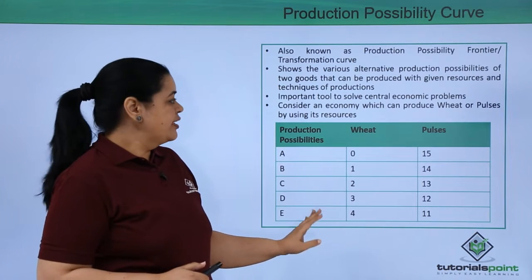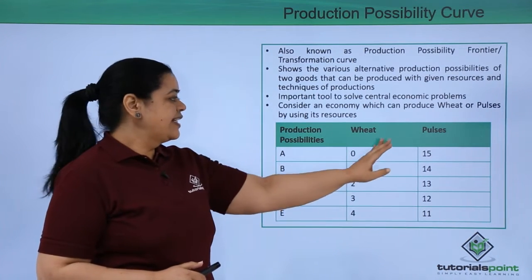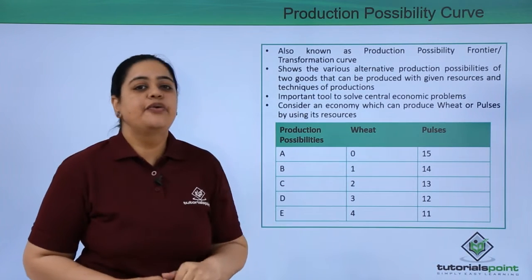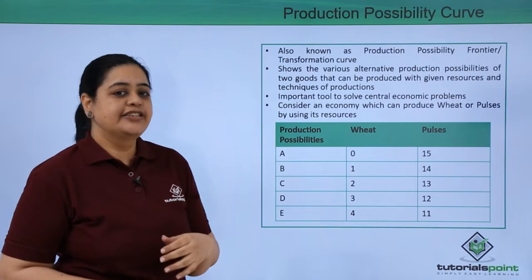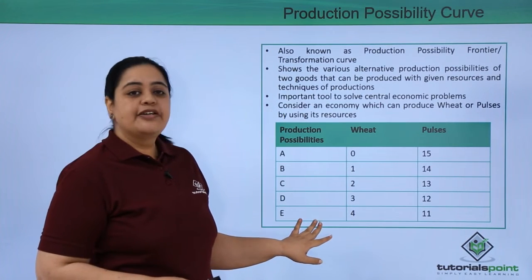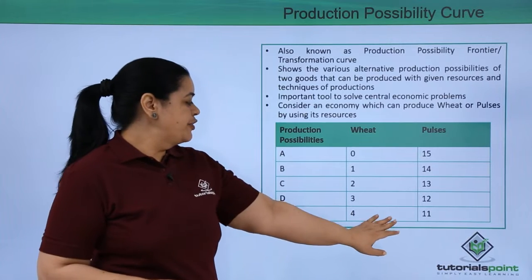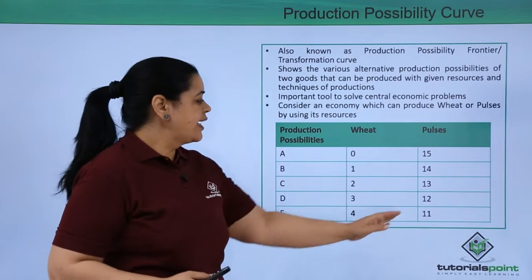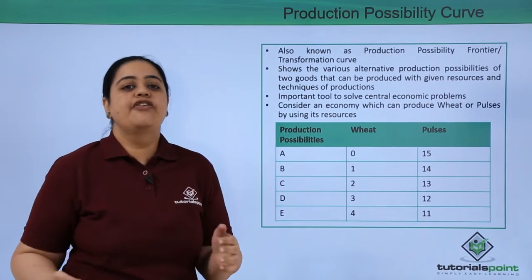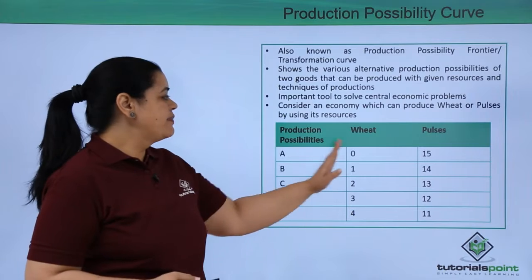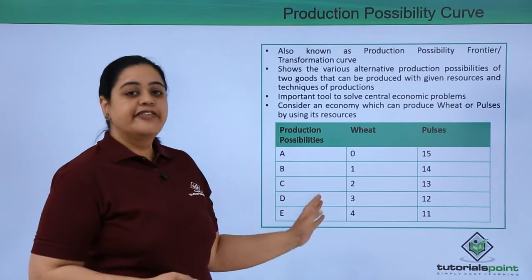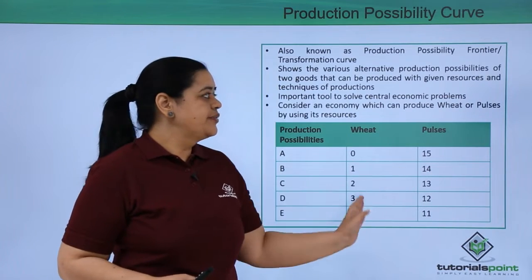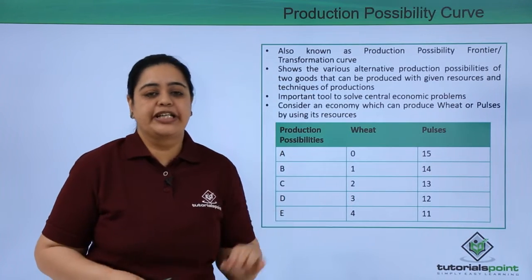We have different production possibilities given. For example, if 0 kgs of wheat is produced, we can produce 15 kgs of pulses. Under alternative E, if I produce 4 tons of wheat, then I can produce 11 tons of pulses. So that's what the PPC is all about — it tells you, under different production possibilities and based on the techniques you have, what two things you can produce and in what quantity.